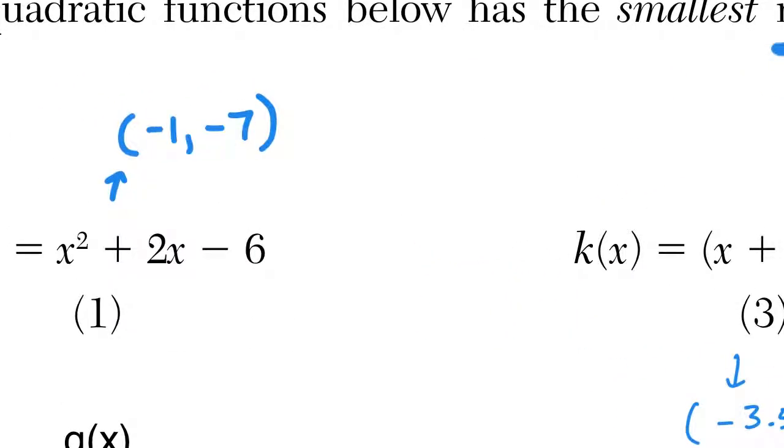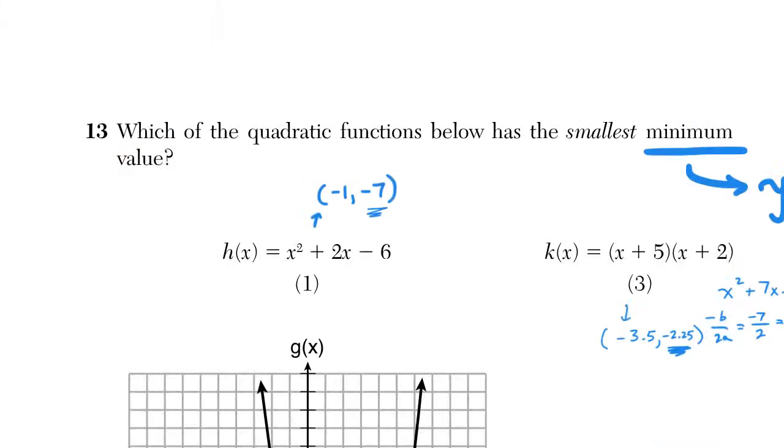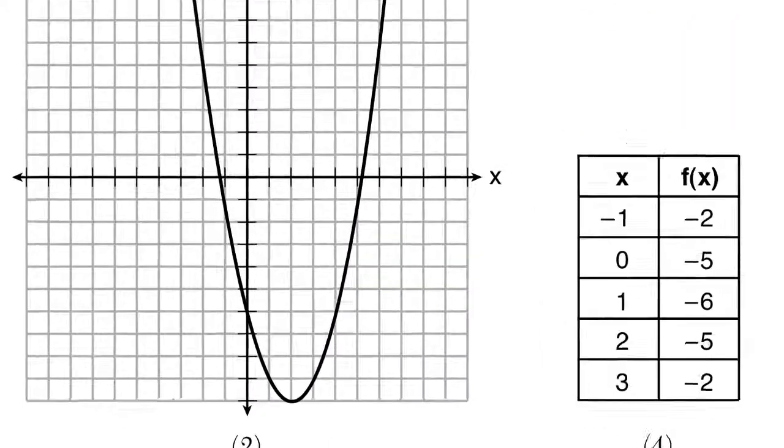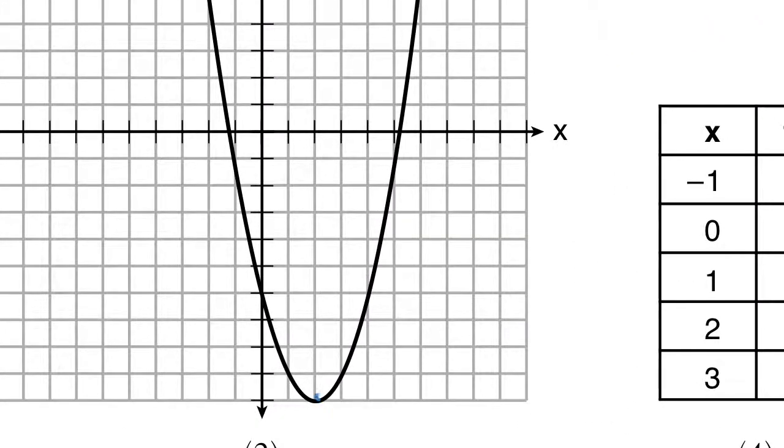So far, we can kind of cross off choice 3 because negative 7 in choice 1 is right now the smallest minimum value. We're looking for the smallest number possible. The graph is going to be the easiest one to find the minimum. That's going to occur right where the vertex is. We can literally see that right on the bottom of our graph. It's just simply a matter of counting. We see it's at 2, negative 10.